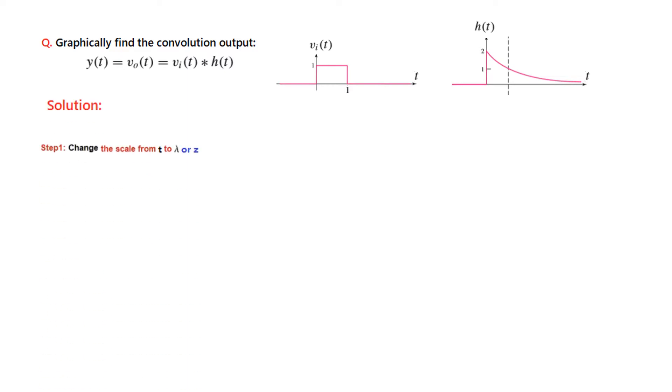Step number one is change the scale from t to lambda or z or any other variable. And why we want to change this t? Because we will be using this letter t as a variable in solving the problem. So we have changed the variable t to z and so does the name changes. So v(t) becomes v(z) and h(t) becomes h(z).